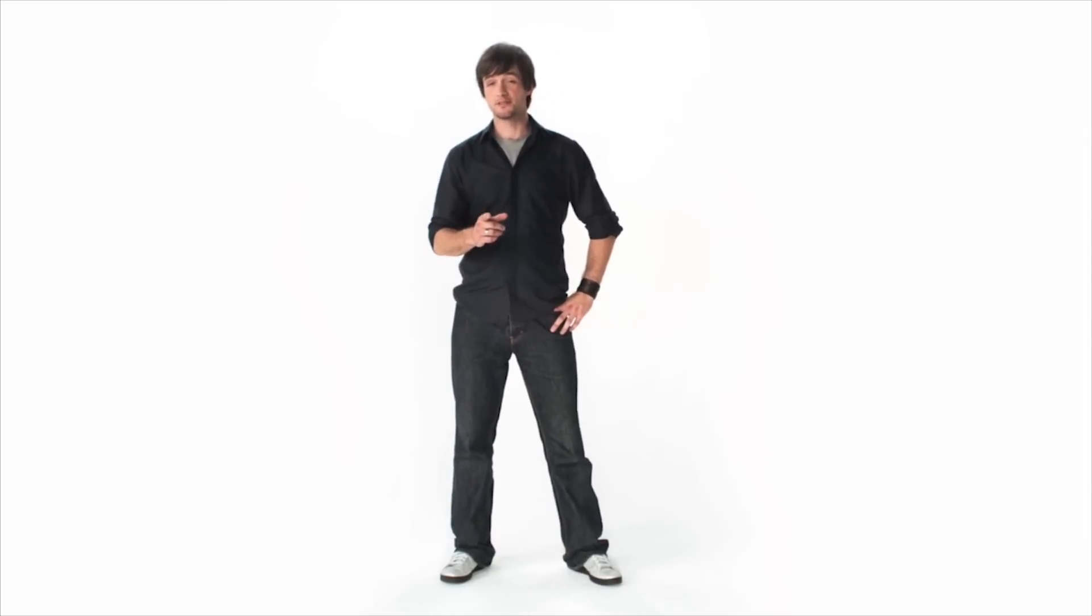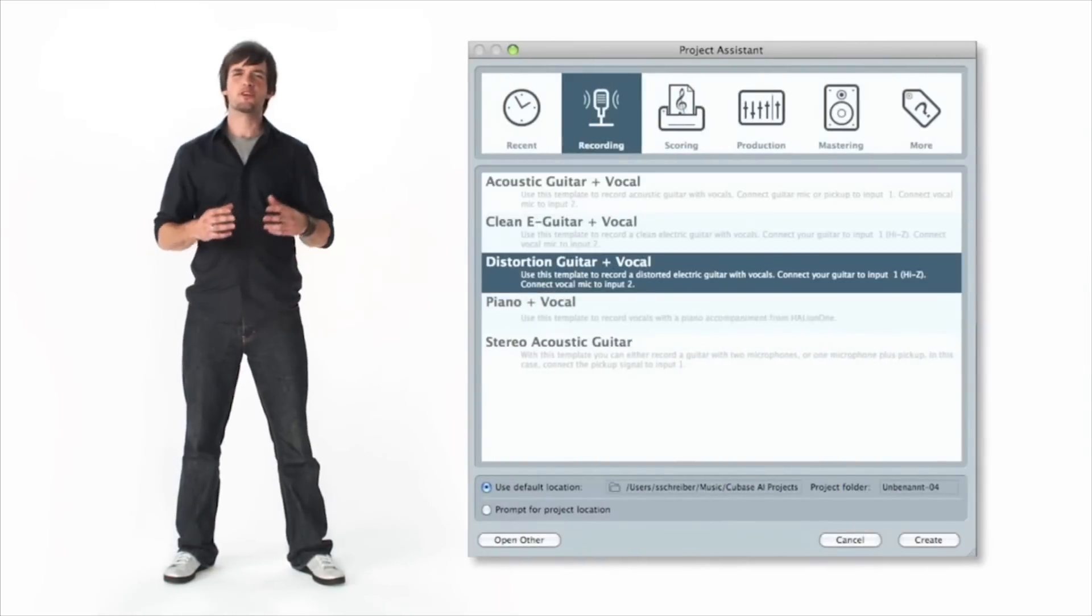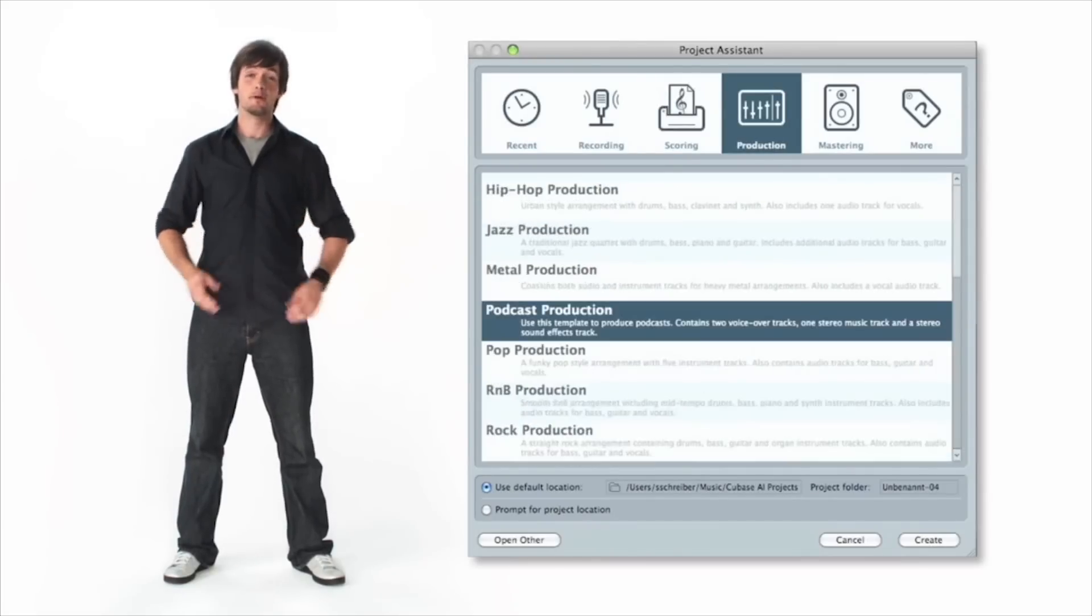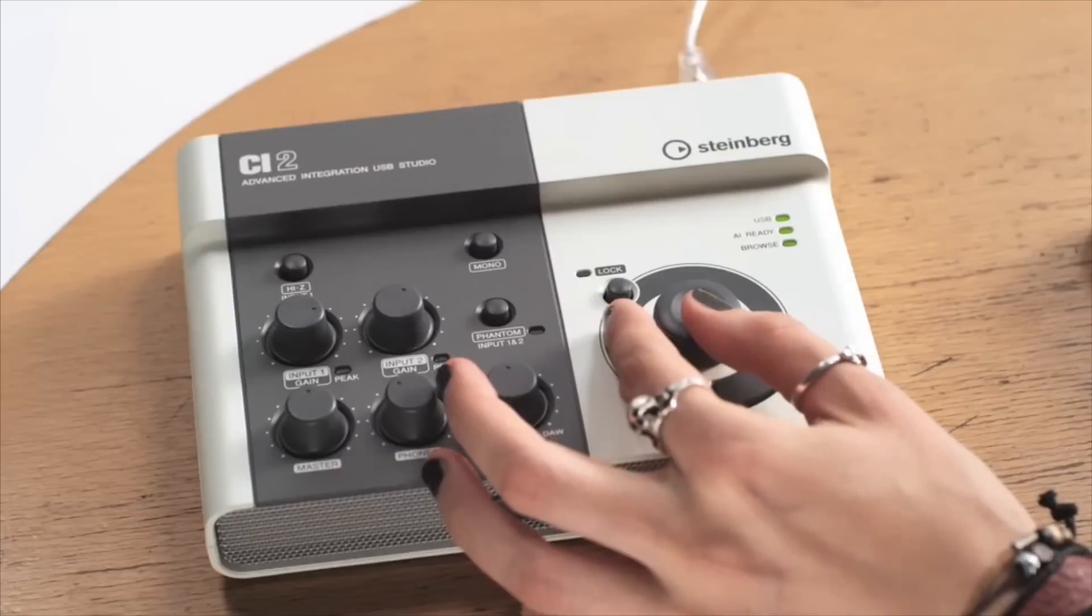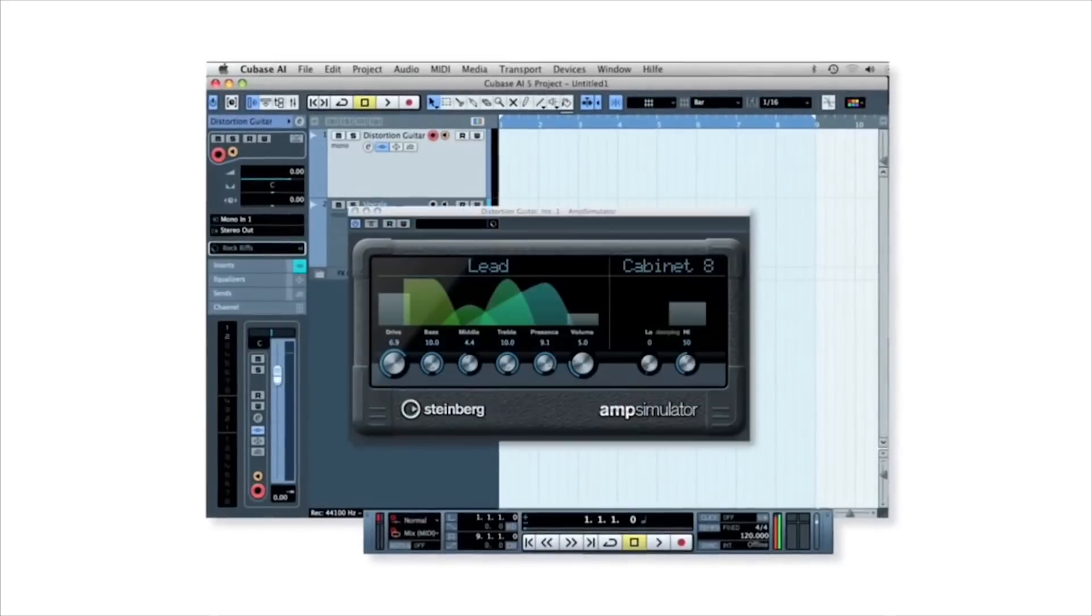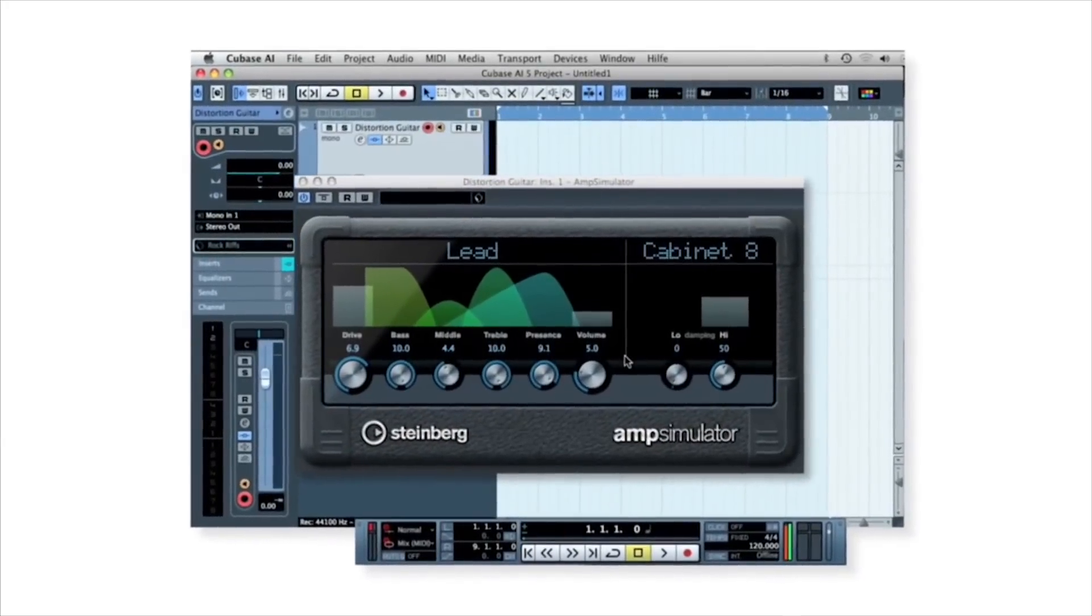So now everything's hooked up, and here's where CI2 gets things flying. CI2 comes with a huge number of templates that cover not just many recording situations, but also genre. Press the AI knob and choose the preset you want. All settings like a great sounding amp simulator are already set up for you. Now you're ready to rock.